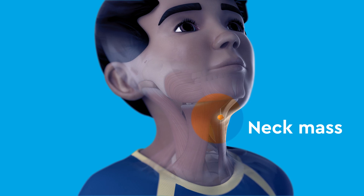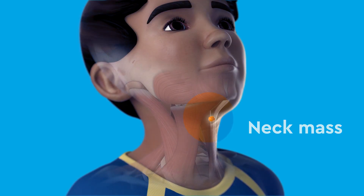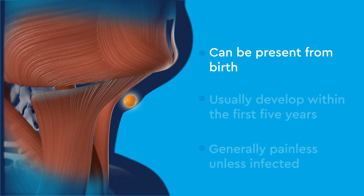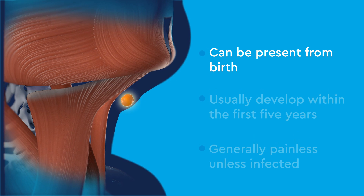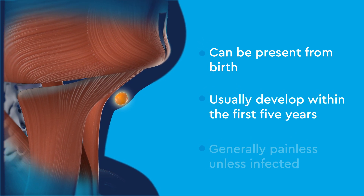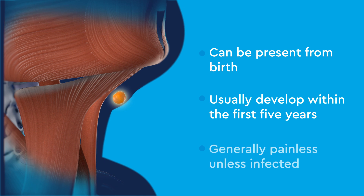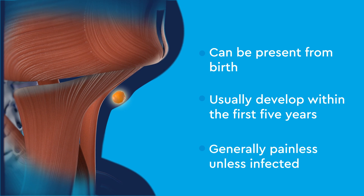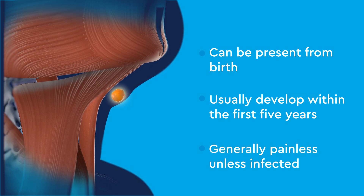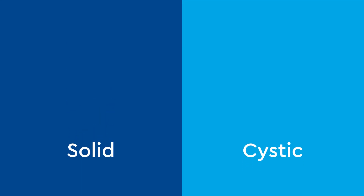A neck mass is a bump or lump on the neck. Neck masses can be present from birth, but usually develop within the first five years of your child's life. They are generally painless unless infected. There are two types of neck masses: solid or cystic.